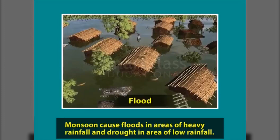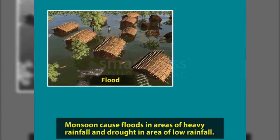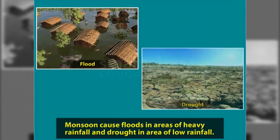Monsoon causes floods in areas of heavy rainfall and drought in areas of low rainfall.